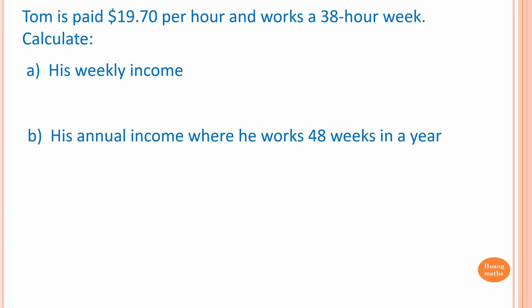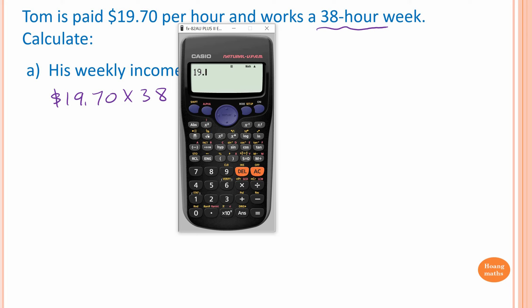Please stop the video and try this one yourself. Tom is paid $19.70 per hour and works 38 hours a week. Calculate his weekly income. So we know that he works 38 hours in a week, so all we need to do is we just go $19.70 times by 38. So we go $19.70 times 38, $748.60.